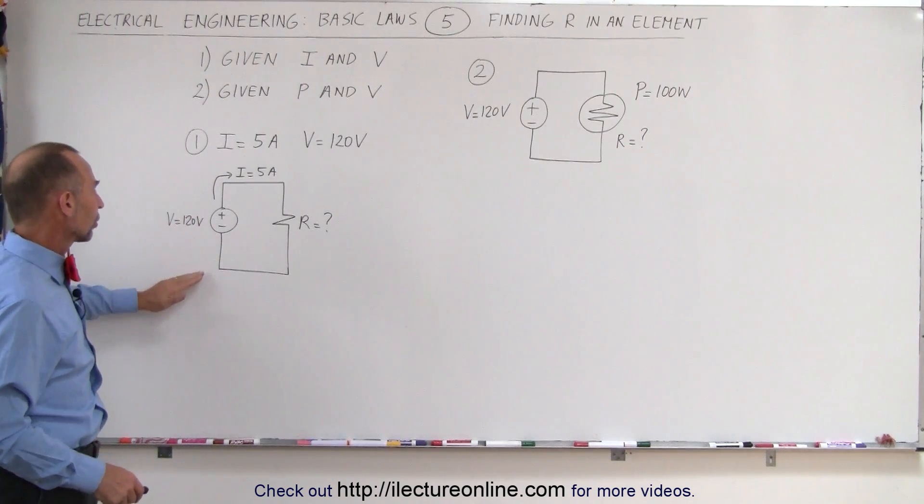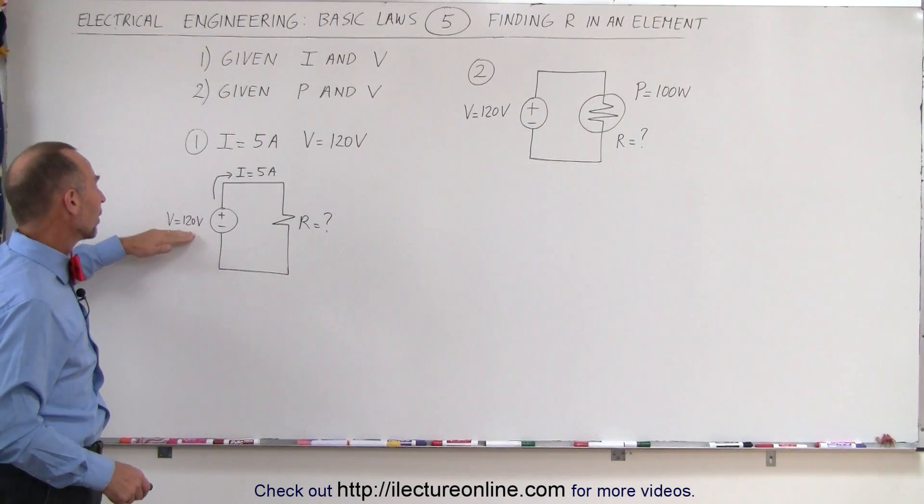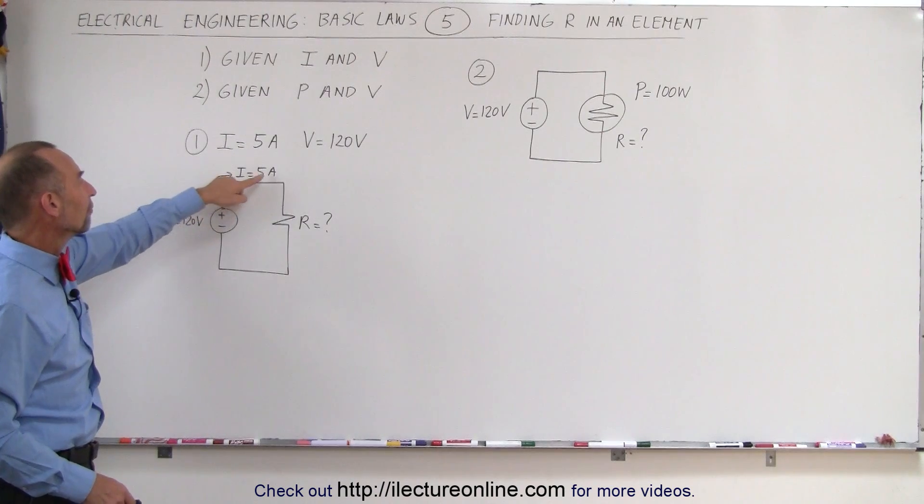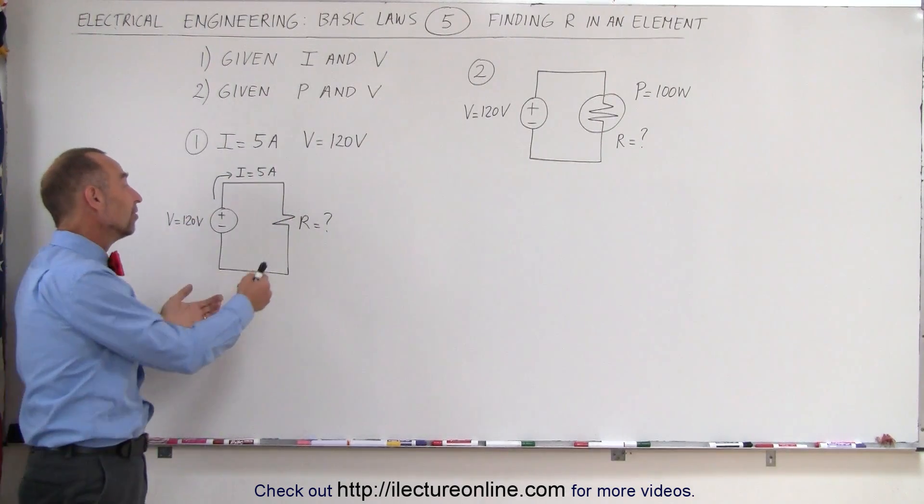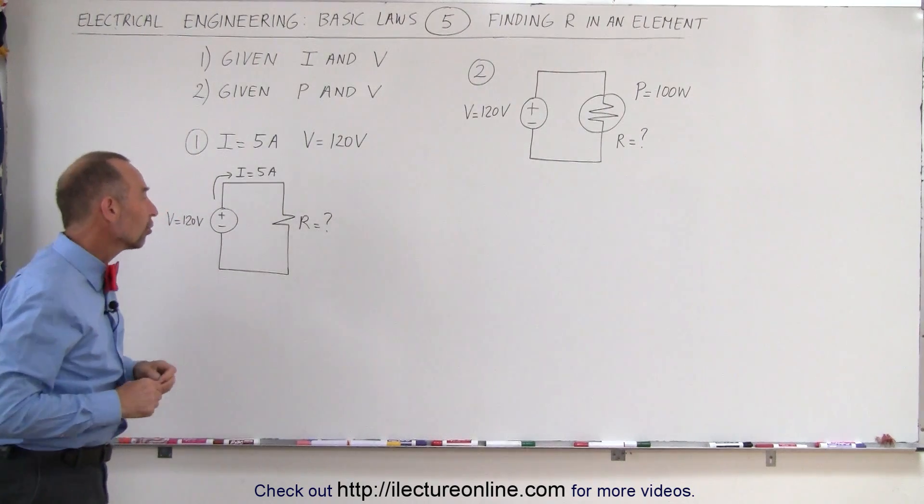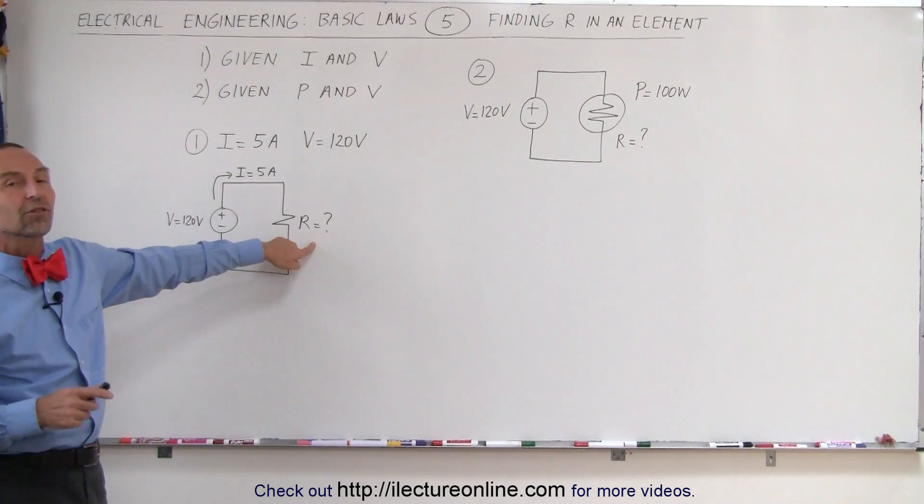In the first case, let's say we have a circuit with a voltage source of 120 volts and a current of 5 amps. There's a load resistor, a device that's connected to the circuit, and we're trying to find the resistance of that device.